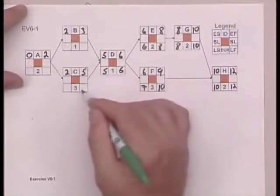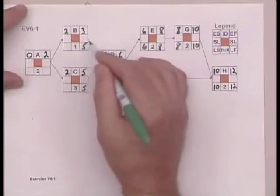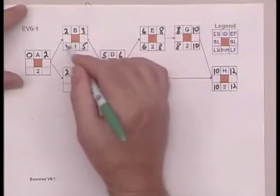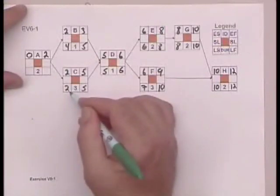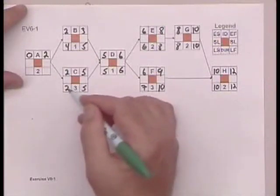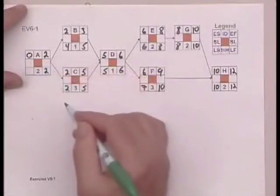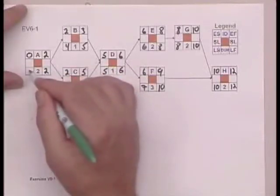1 minus 6 is 5. 5 and 5, 1 minus 5 is 4, and 2. We have another choice, 4 or 2. Remember, what do we remember? We remember to choose the smaller number going back, which is 2. 2 minus 2 is 0.